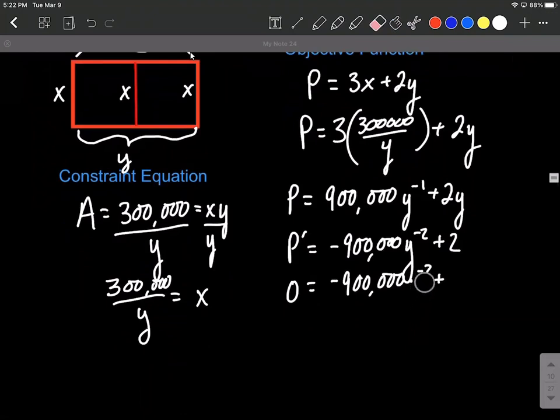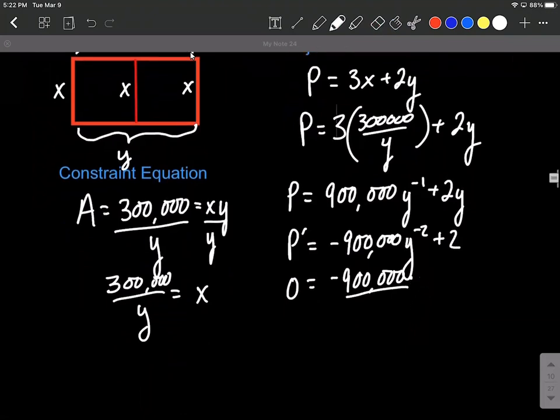And actually, instead of using the negative second, I'm going to rewrite that so it's down in the denominator, making it back to a positive exponent. So y to the positive second plus 2.